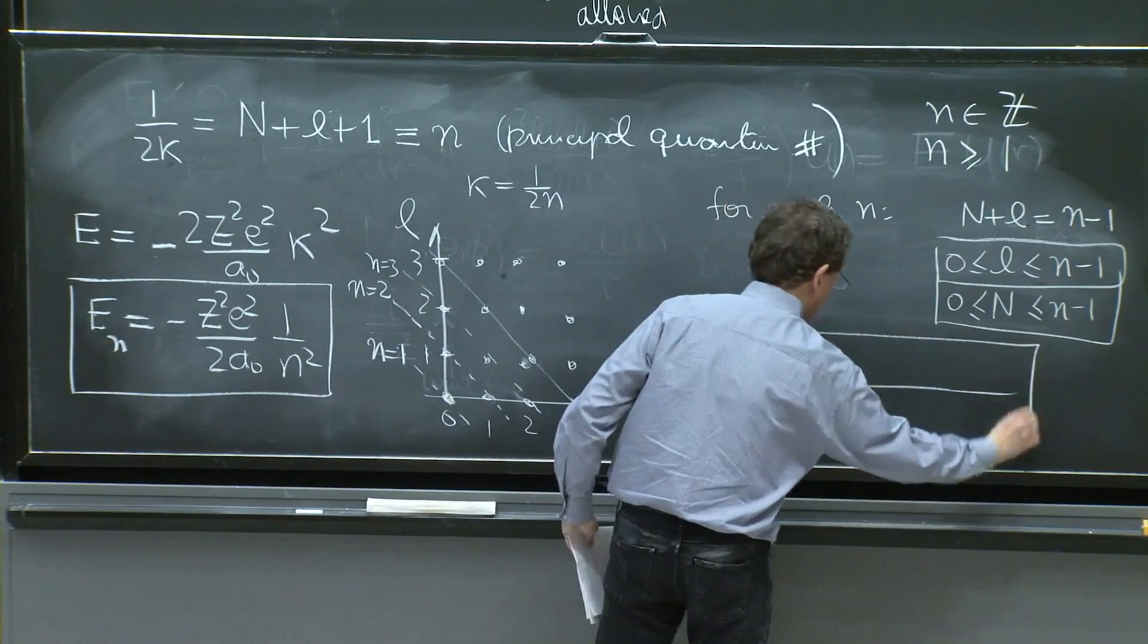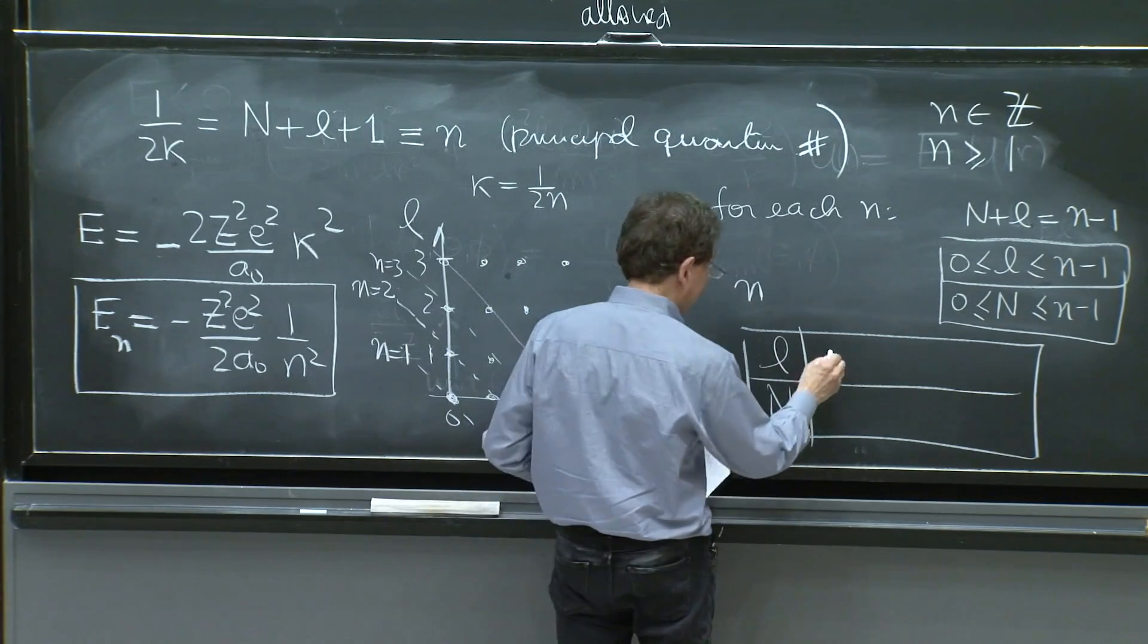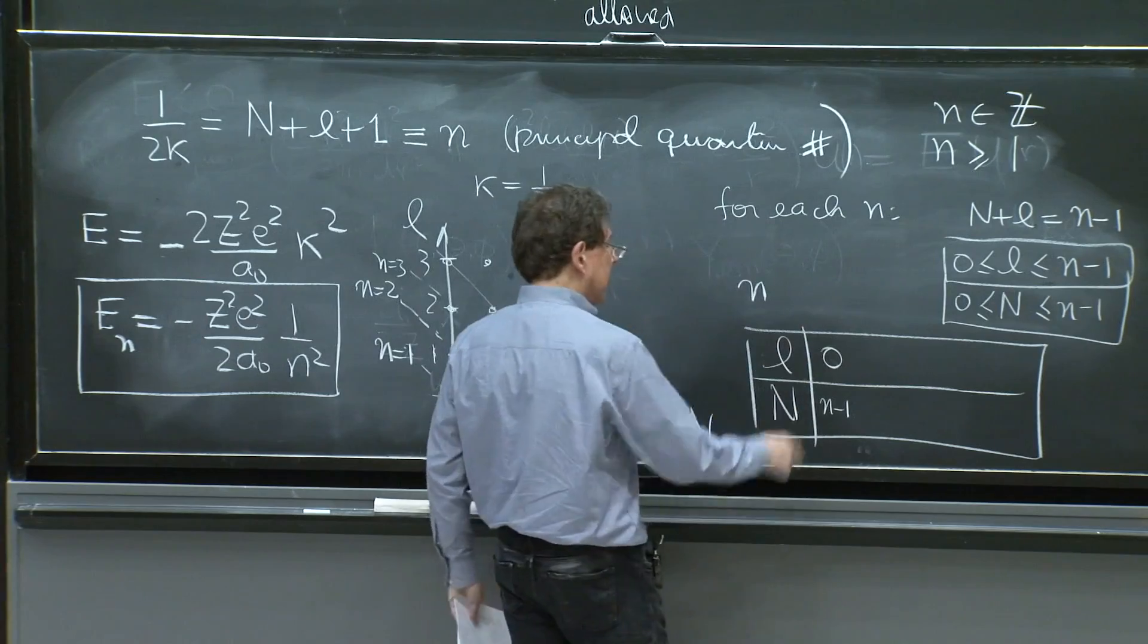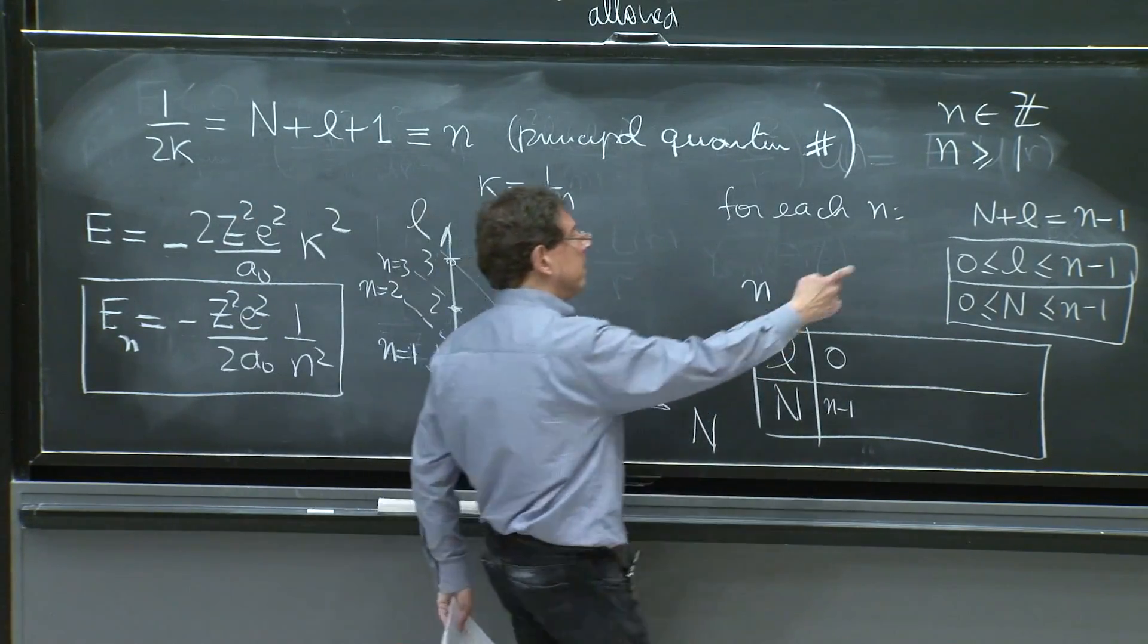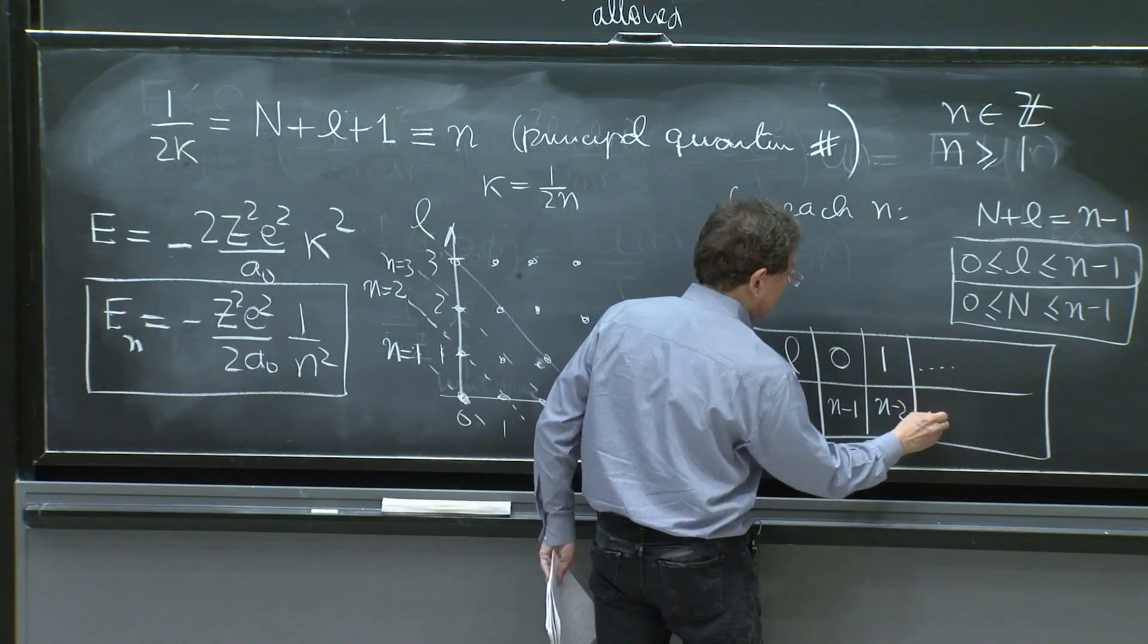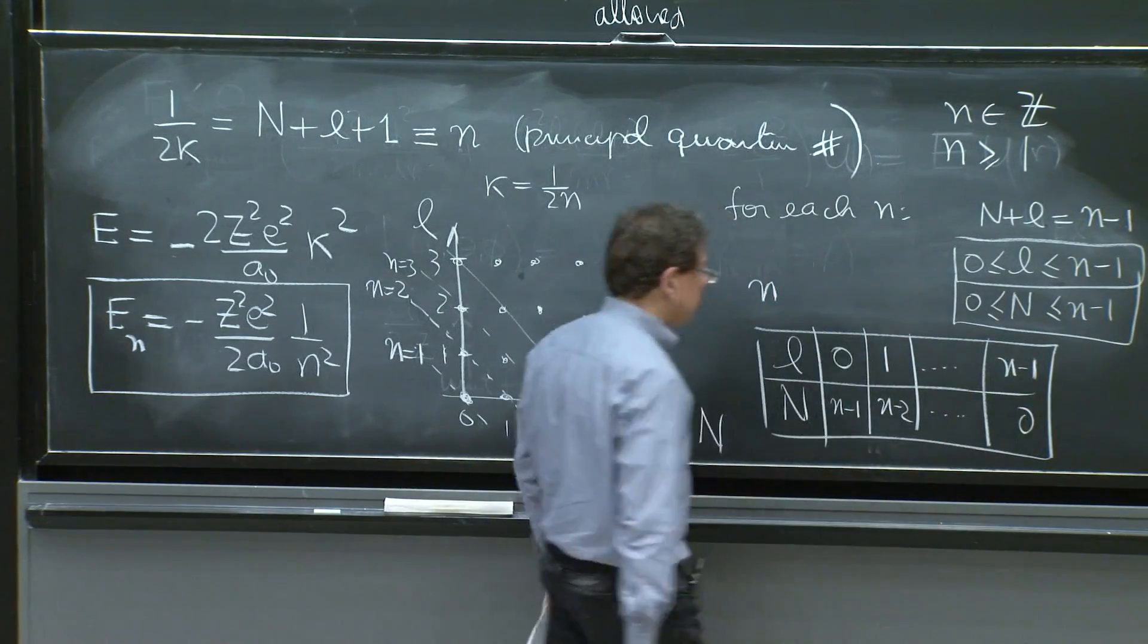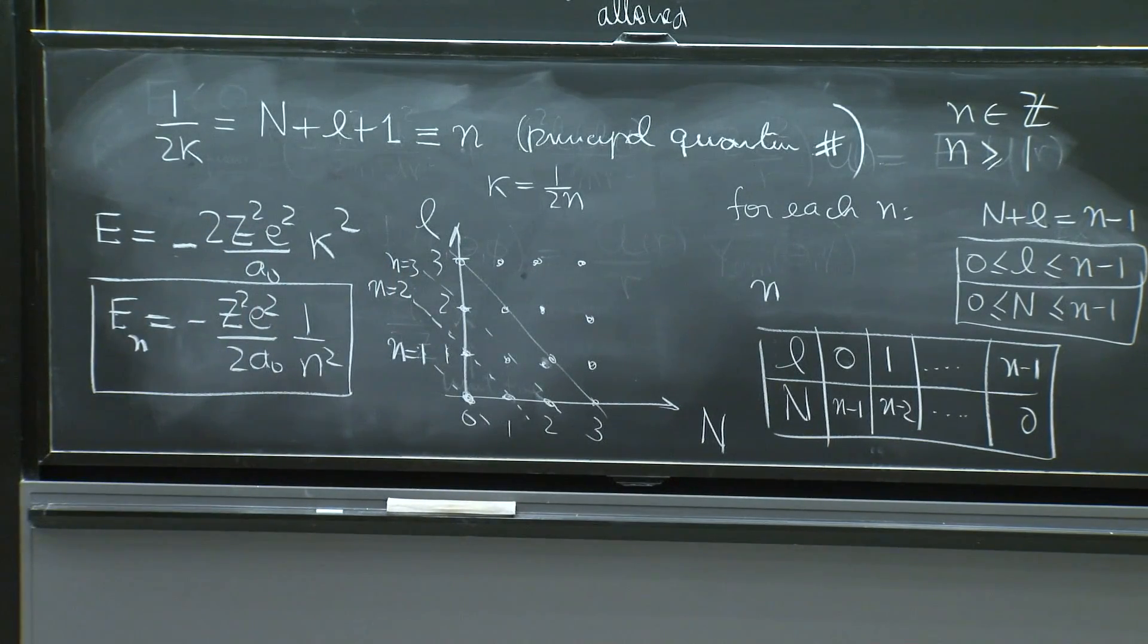So if you have some n, you will have l and n. For example, for some quantum number n, you will have l equals 0, and n would be n minus 1. That would work out. l plus n would be n minus 1. Or 1 and n minus 2. Or all the things up to n minus 1 and 0. So they take turns. They have to add up to n minus 1.